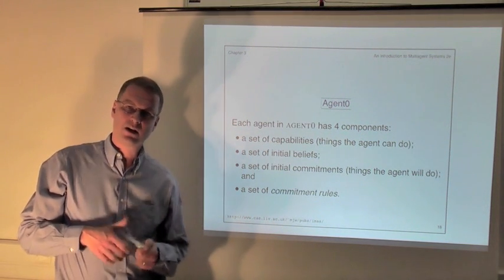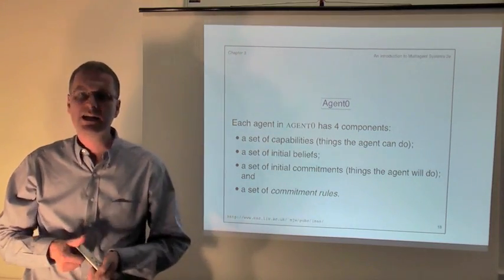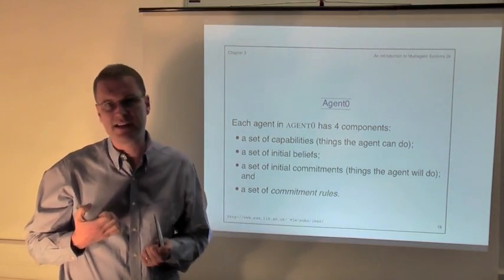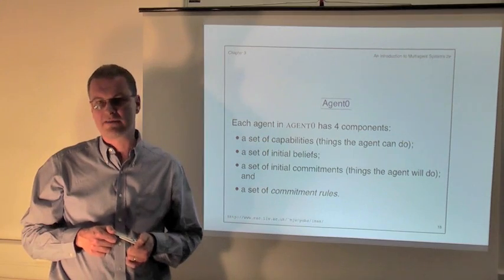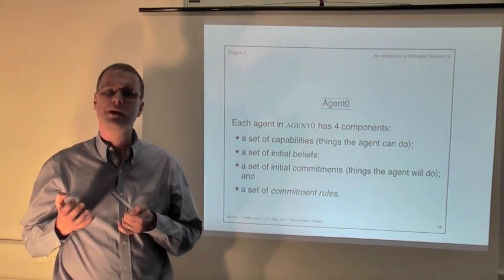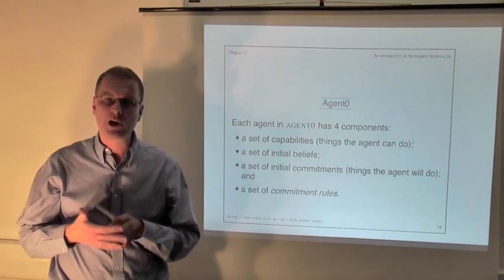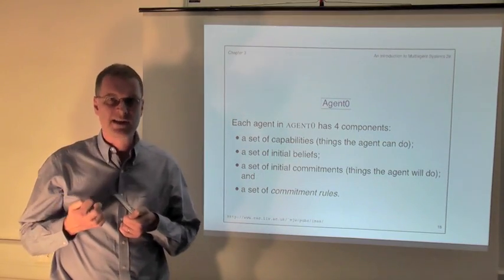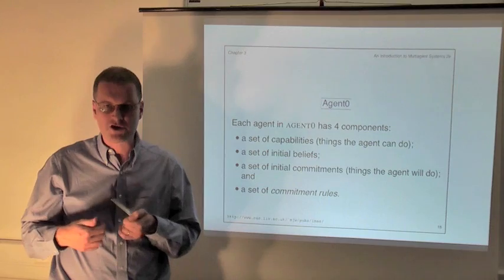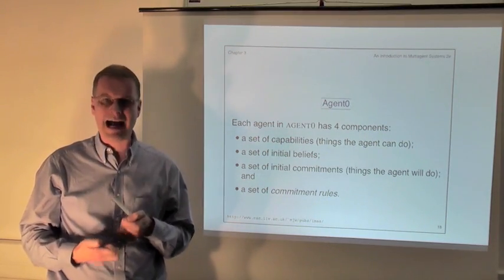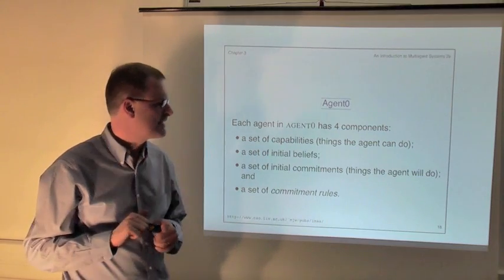Previously, I introduced the idea of symbolic reasoning architectures and, more specifically, deductive reasoning architectures. The key idea is that an agent has an explicitly represented symbolic model of its environment, and makes decisions about what action to perform via explicit symbolic reasoning. In its purest expression, the internal model is a logical representation — a set of logical formulas — and the decision about what action to perform is made via explicit deductive reasoning.